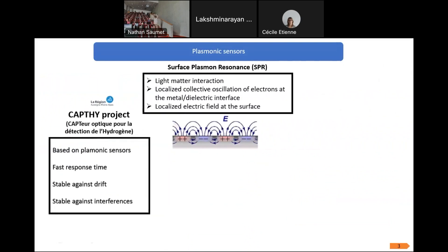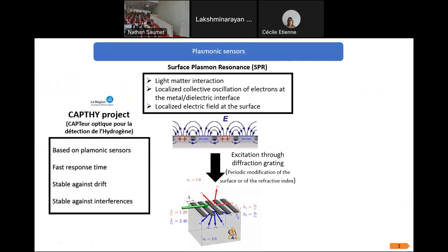To speak about plasmonic sensors, we can first talk about surface plasmon. Surface plasmon is a light-matter interaction where we can achieve localized collective electron oscillation at the metallic surface. This collective oscillation of electrons will induce localized electric field. To excite surface plasmon, one way is to use a diffraction grating, which is a periodic modification of surface. A diffraction grating is characterized by period and depth.